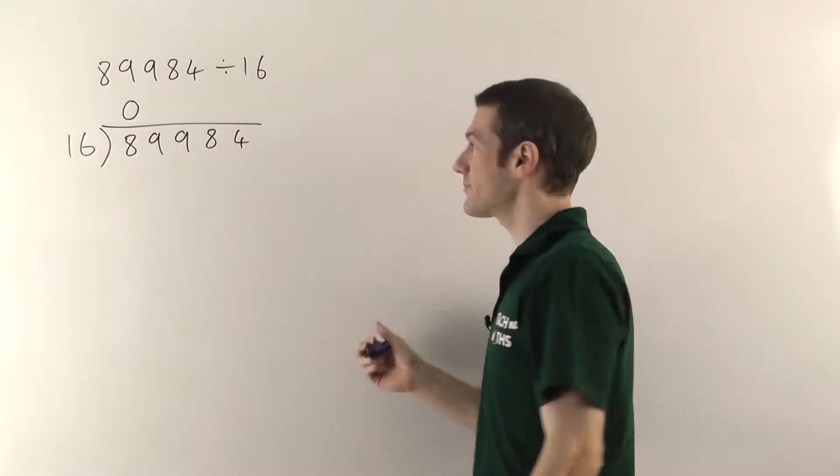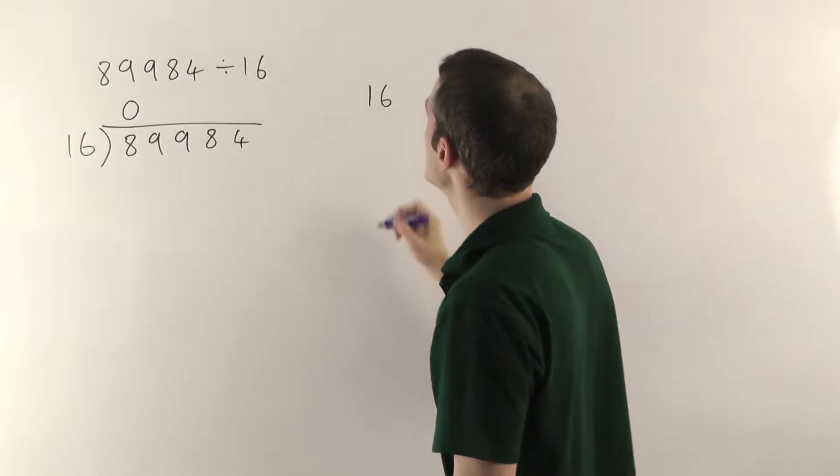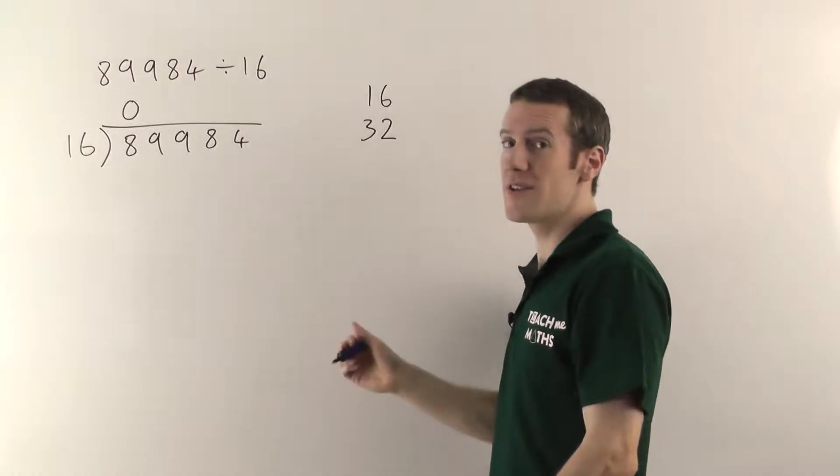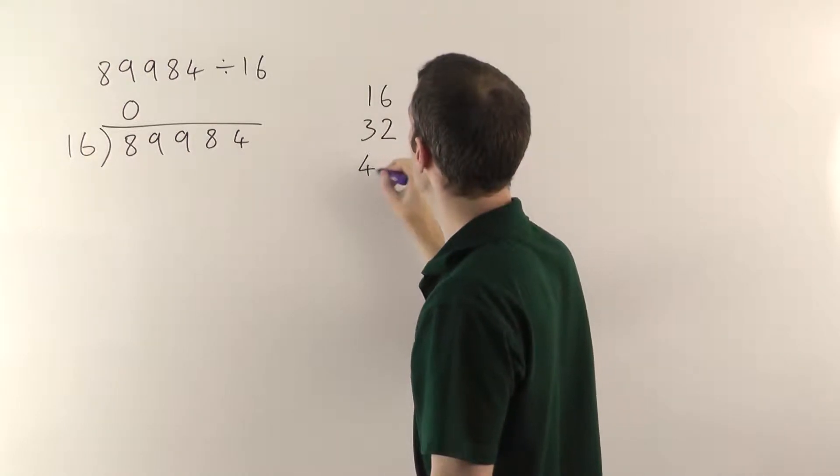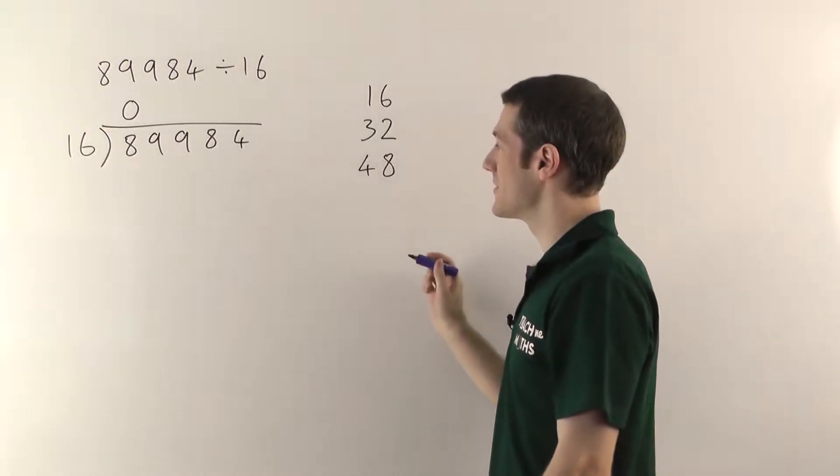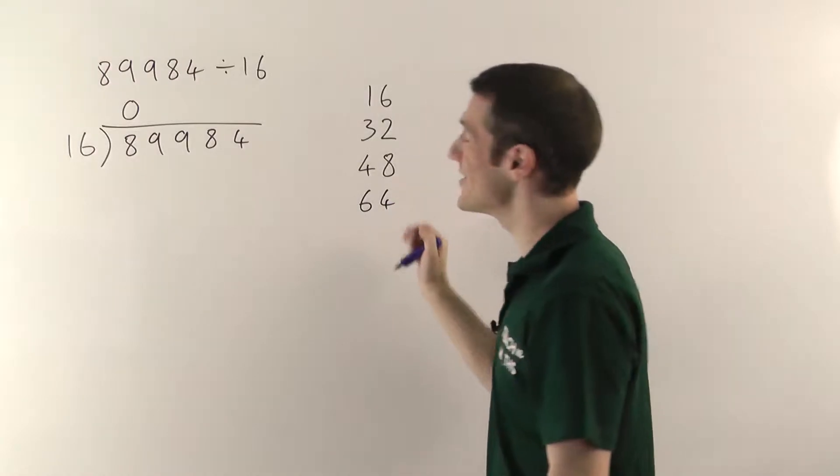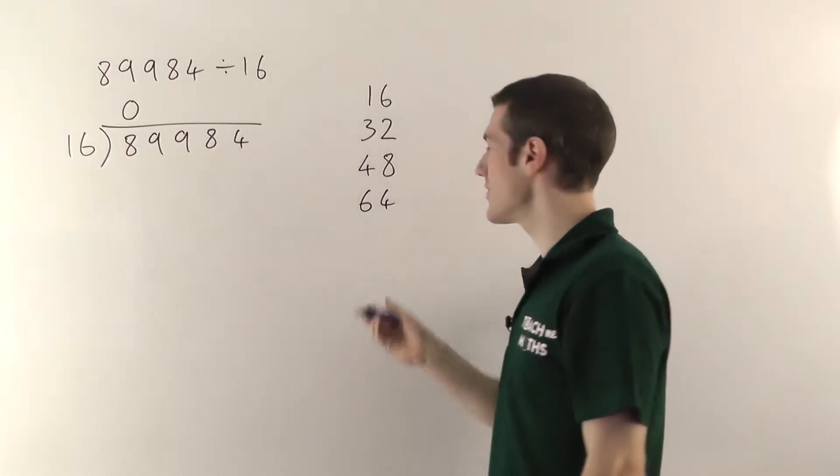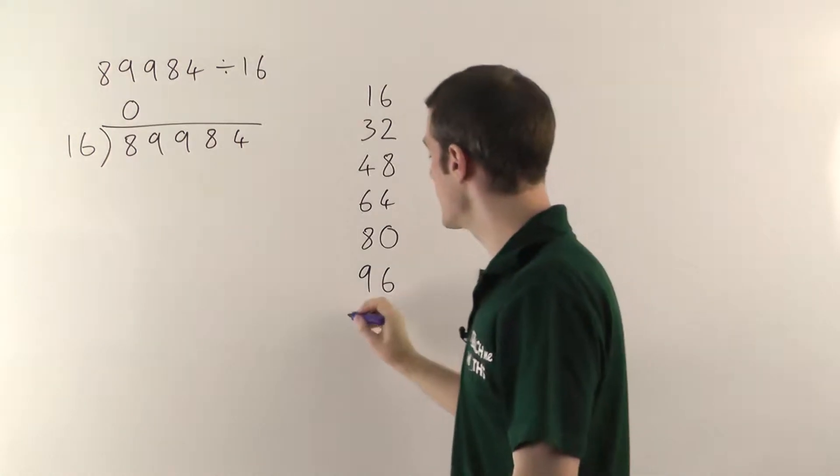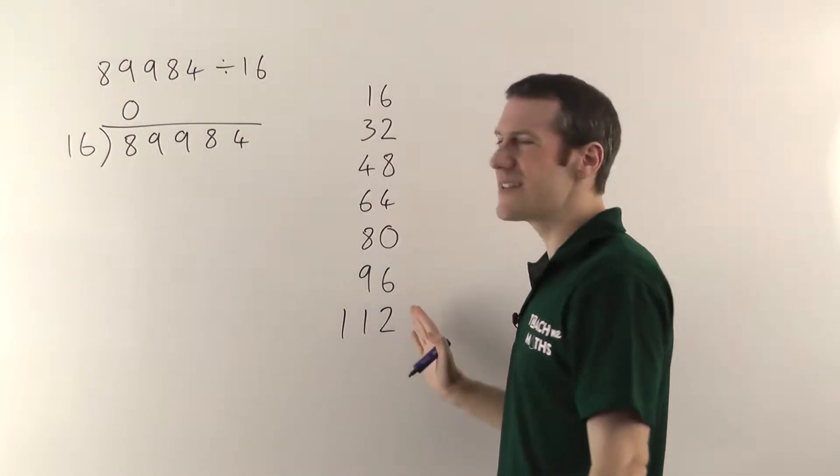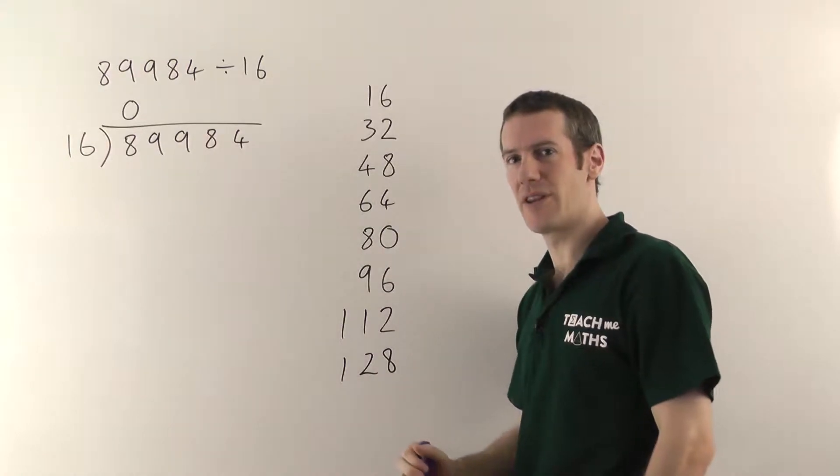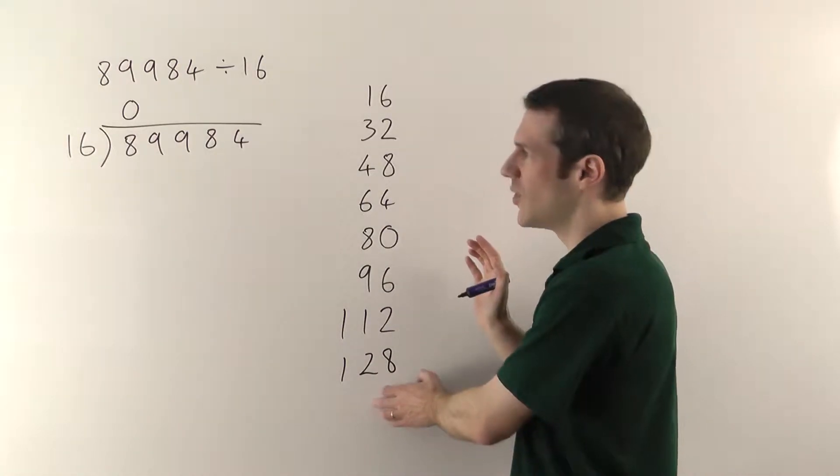So one sixteen gives me sixteen. Two sixteens, if I just add another sixteen onto that, gives me 32. Three sixteens, add another sixteen on, gives you 48. We're going to keep going here, just add sixteen each time to get the first few numbers from our sixteen times table. Do seven or eight of them. If you need to know any more, you can always come back and add some more on the end.